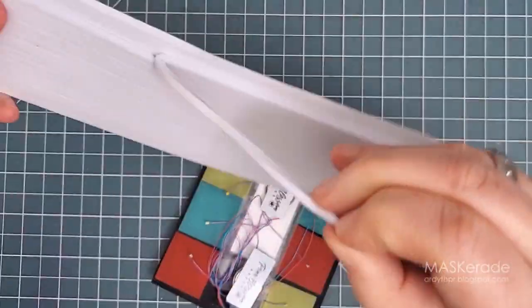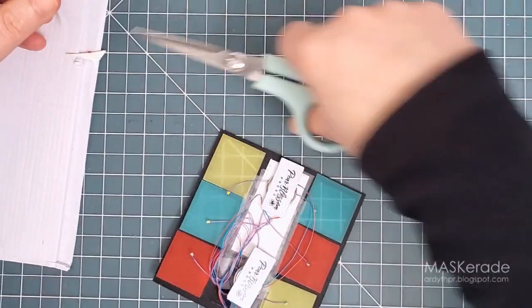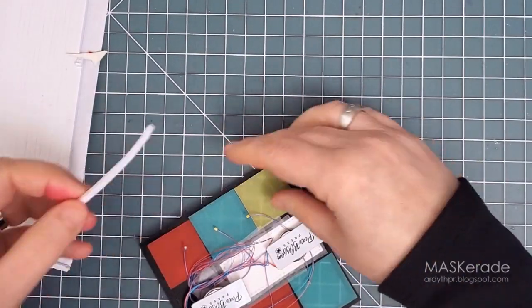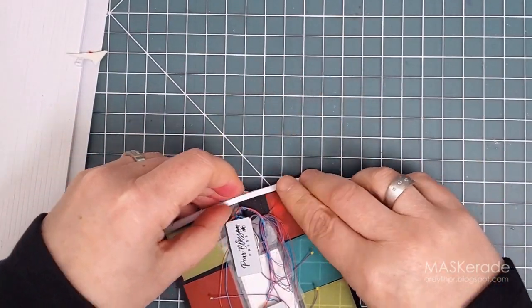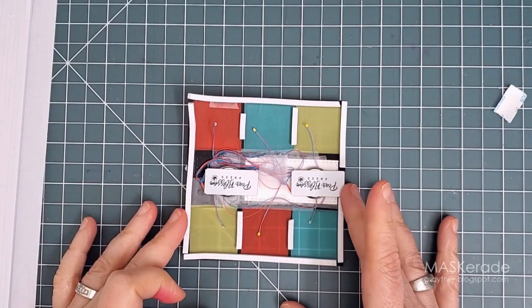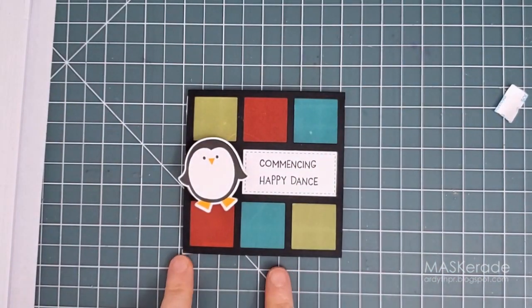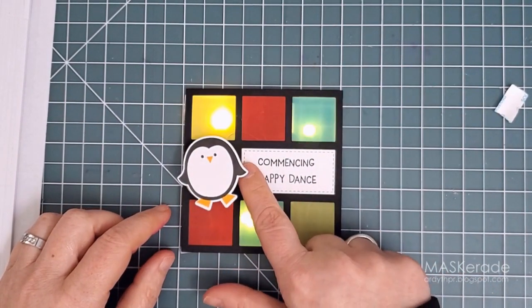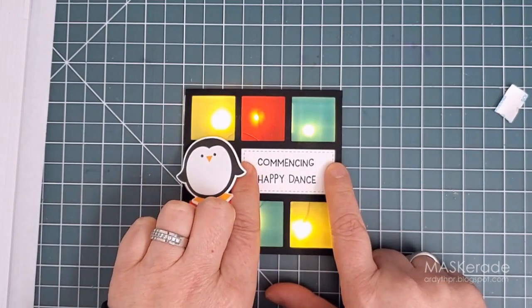Next I used some foam strips to build up some dimension around the black frame to allow for the thickness of the battery packs. And again the narrowness of that frame made it a bit fiddly. Obviously I don't want the foam tape showing out the sides, so I flipped it over to check and correct my placement where necessary.